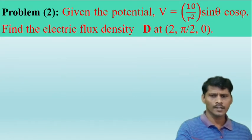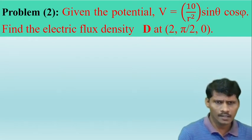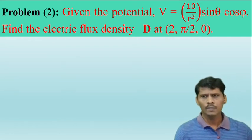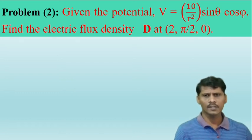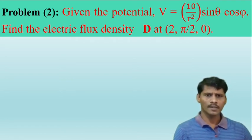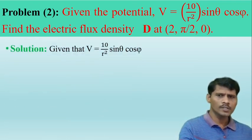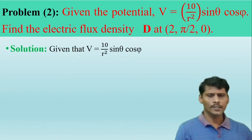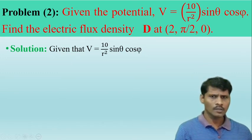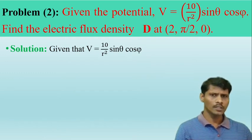Moving to another example: given the potential V = 10/R²·sinθ·cosφ, find the electric field intensity E and electric flux density D at point (2, π/2, 0). The variables R, θ, and φ are spherical coordinate system variables, so we consider the spherical coordinate system.